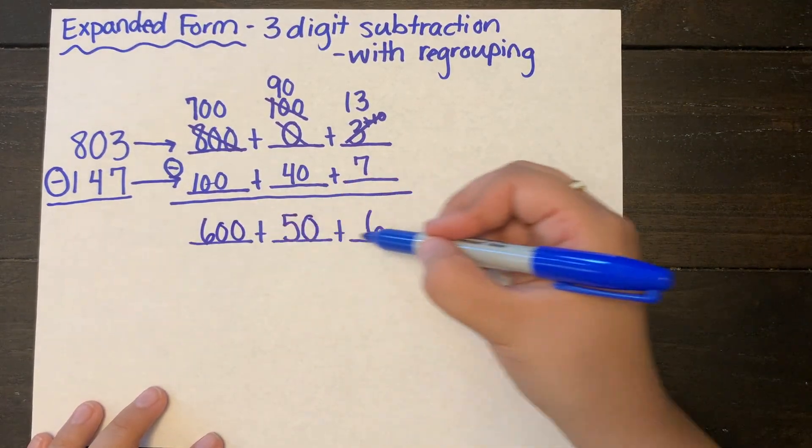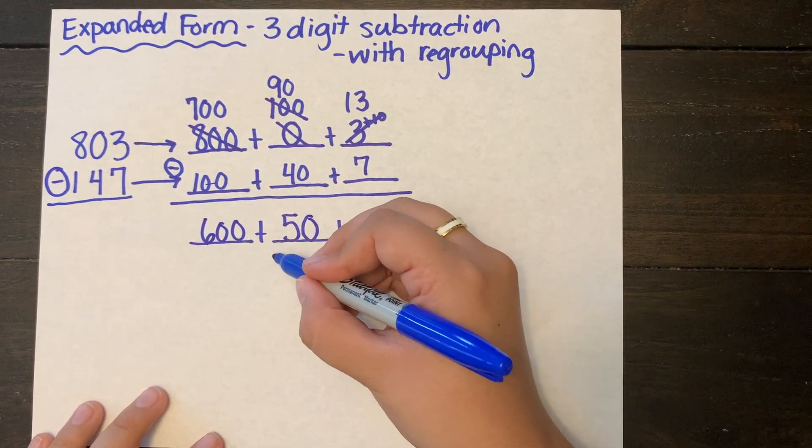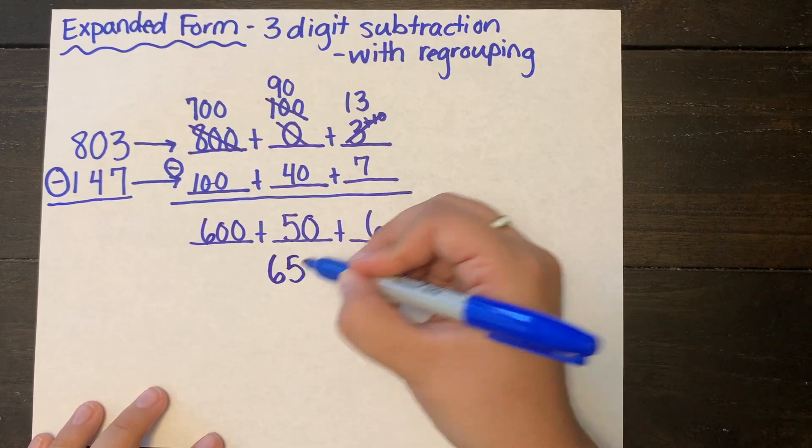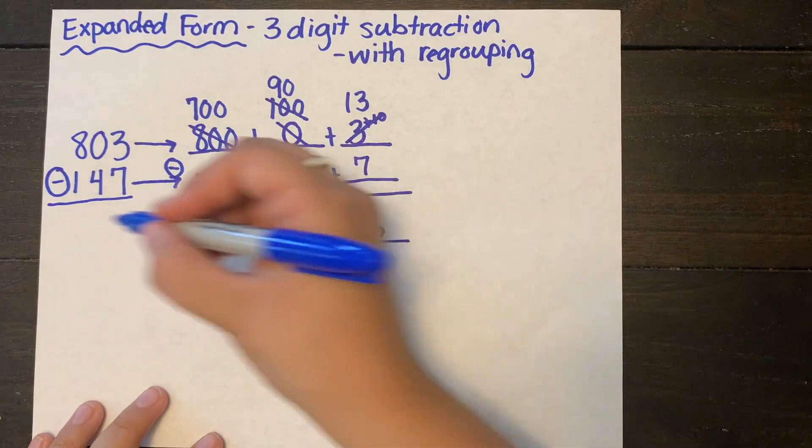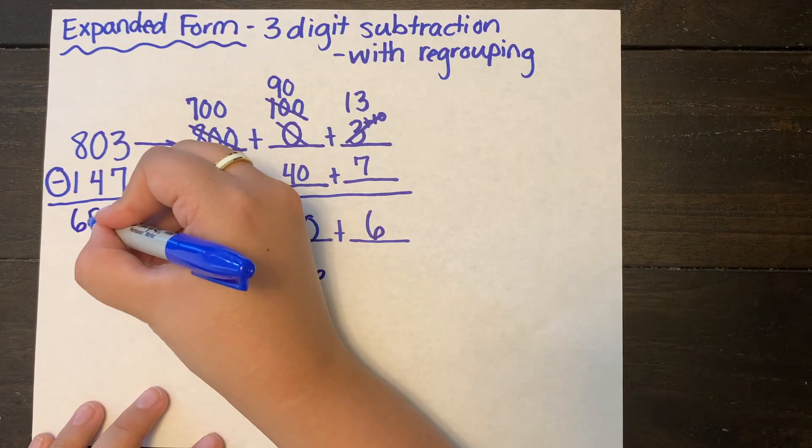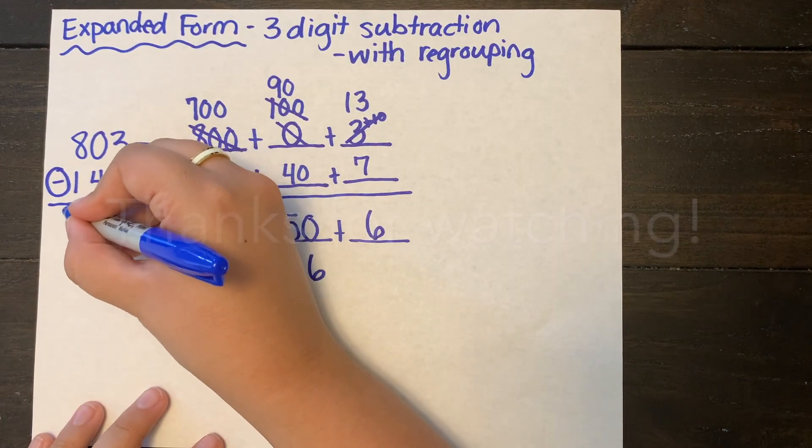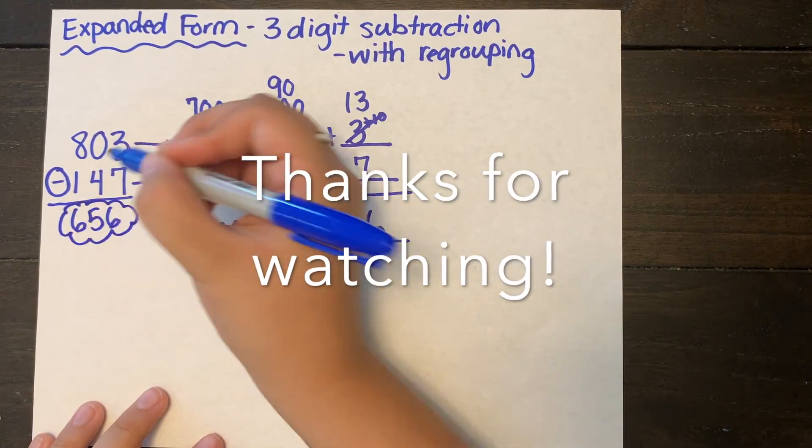And this is a very easy way to put that number back together after I expanded it out. Six hundred plus fifty plus six equals six hundred fifty-six. Not as complicated or scary as it seems.